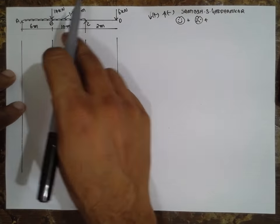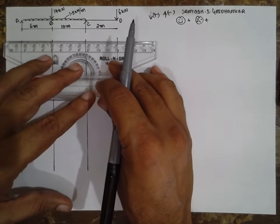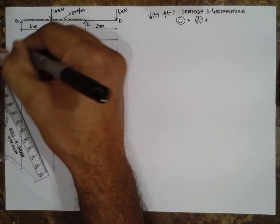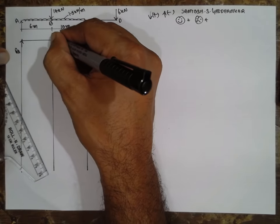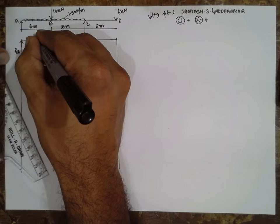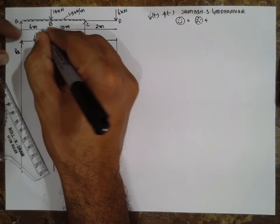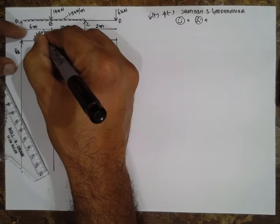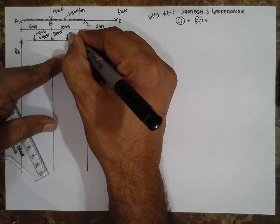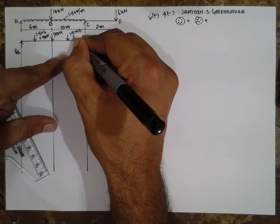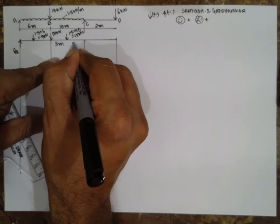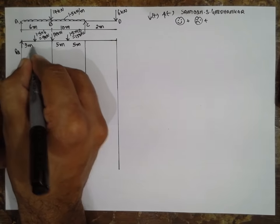First I will convert UDL into point loads. The reaction RA is 14 kilonewton. The UDL is 1.5 kilonewton per meter. Exactly at the center, 1.5 into 6 gives 9 kilonewton. Similarly, 1.5 into 10 gives 15 kilonewton, at a distance of 5 meter from center. The other distance is 3 meter apart.